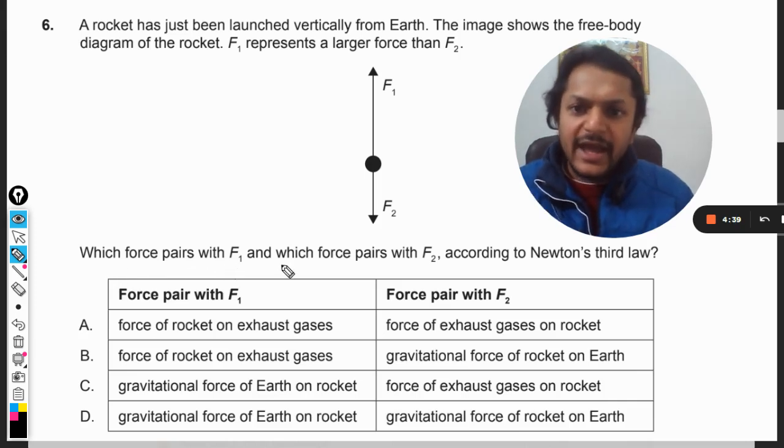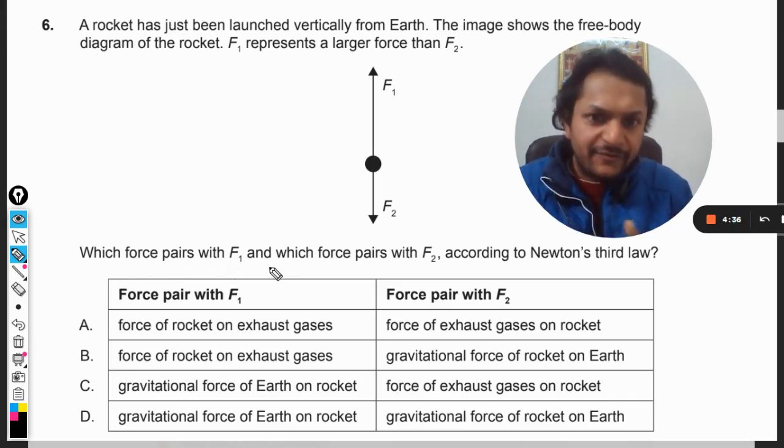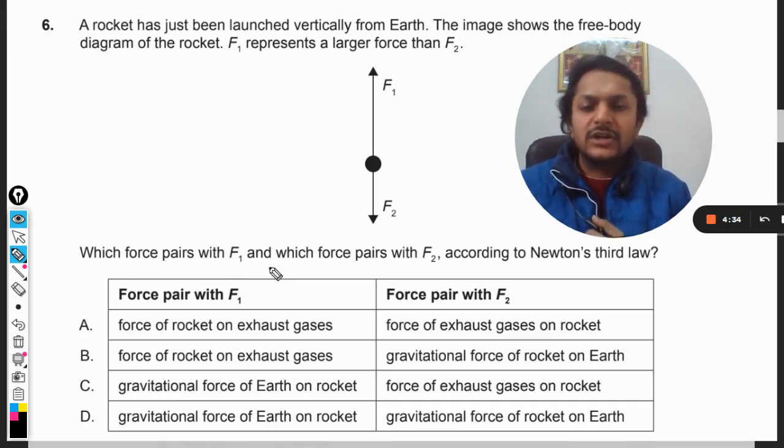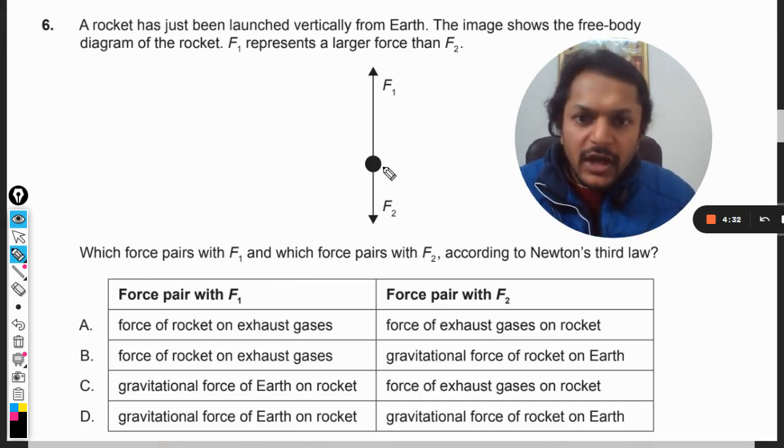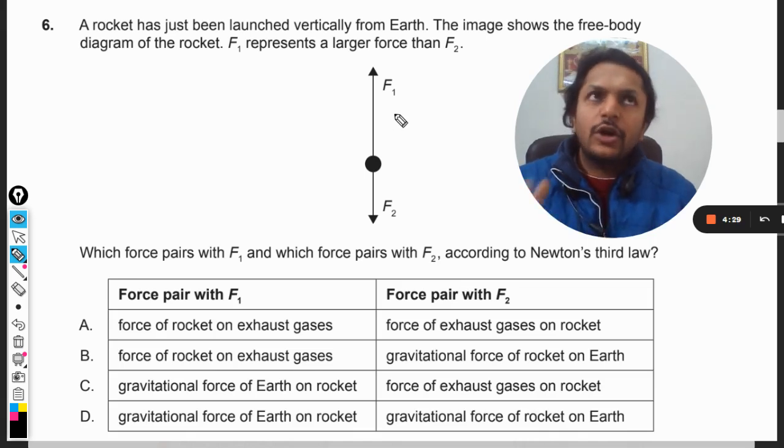So which force pairs with F1 and which force pairs with F2 according to Newton's third law? We have to apply Newton's third law here. There is one force that the rocket is experiencing which is in the upward direction.